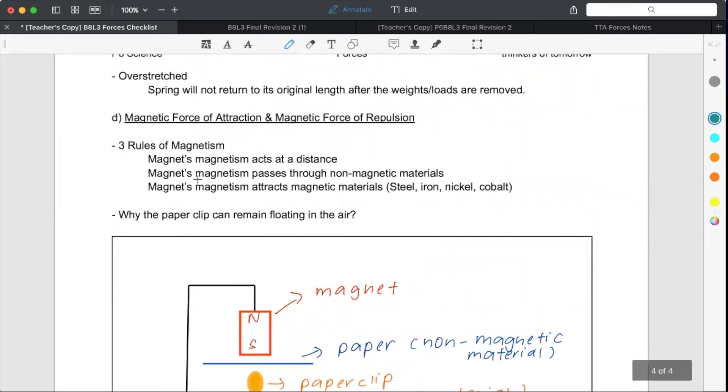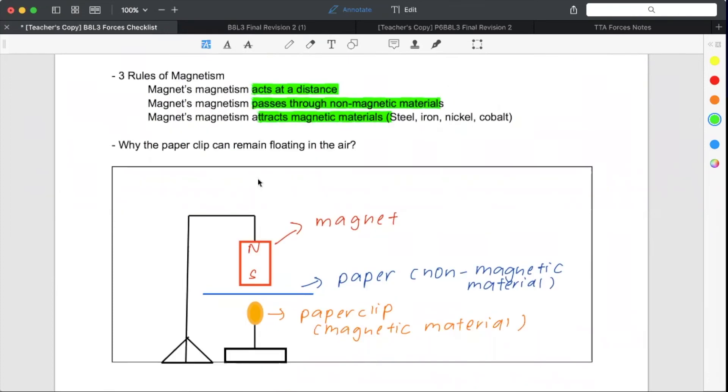So I believe right now, at this point in time, you guys are very familiar with these three rules of magnetism. Magnetism can act at a distance. There's no need for contact. Can pass through non-magnetic materials. You attract your magnetic materials, you should know your steel, iron, nickel, cobalt.